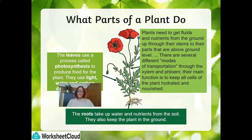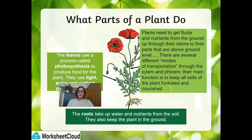Plants need to get fluids and nutrients from the ground up through their stems to the parts above ground level. There are several different modes of transportation. The one you're going to learn about today is through the xylem and phloem. Their main function is to keep all the cells of the plant hydrated and nourished. The mode of transportation for water and nutrients is through the xylem and phloem, which are the vascular tissues found in plants.